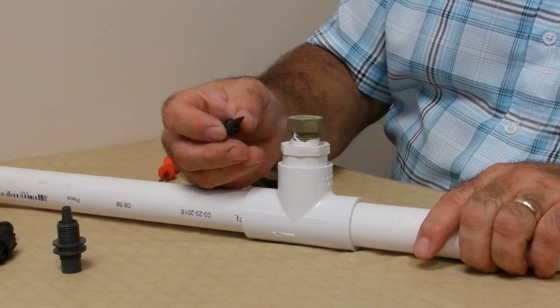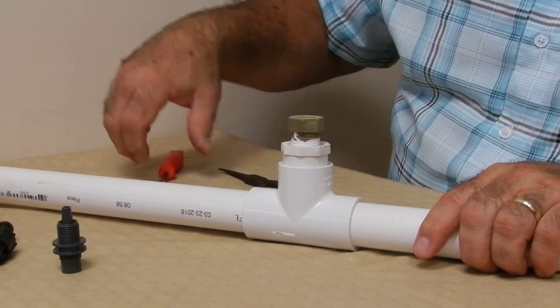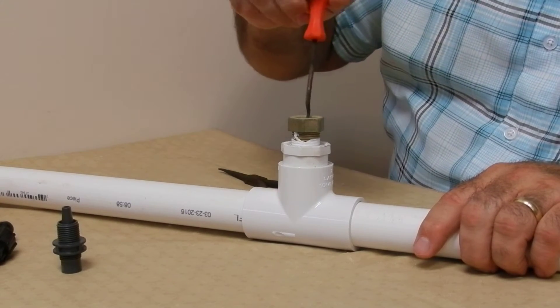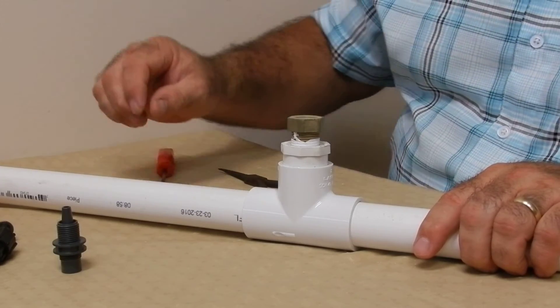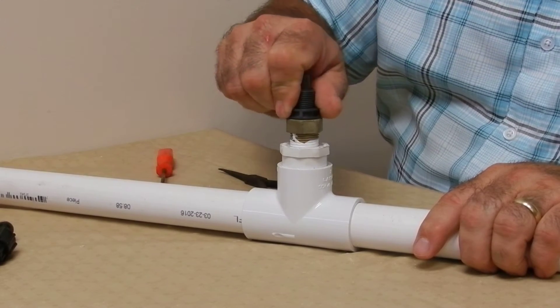Take your new univalve, pointing down into the injector, make sure it sits flat all the way down in there. Replace your tube adapter, hand tight.